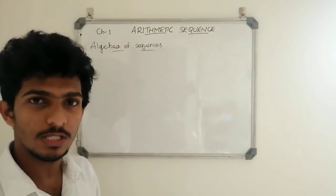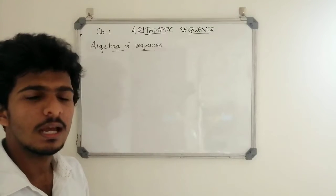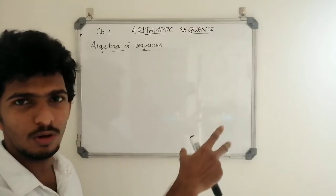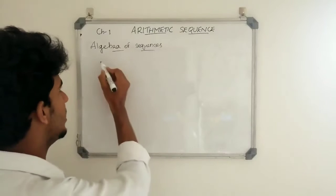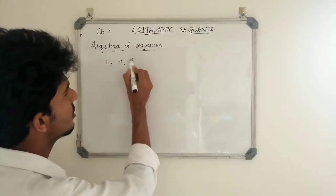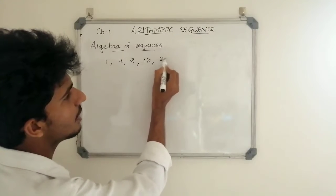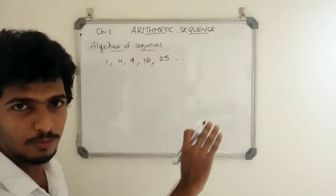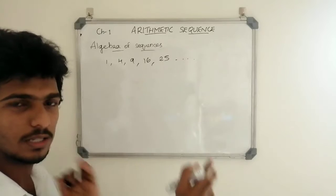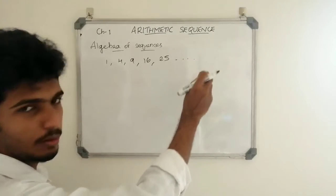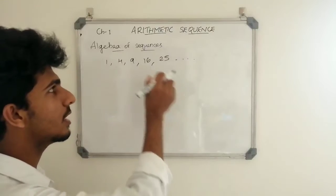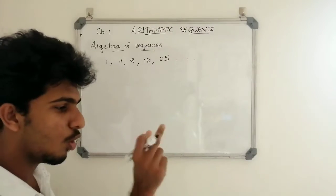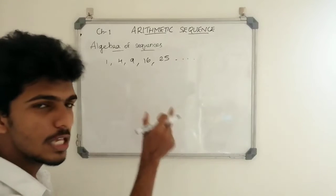Now let's look at the algebra of sequences. If we add the algebra of sequences, the number sequence is infinite. For natural number squares 1, 4, 9 — we can find a particular term. This is algebraic representation: we define the sequence using an equation.